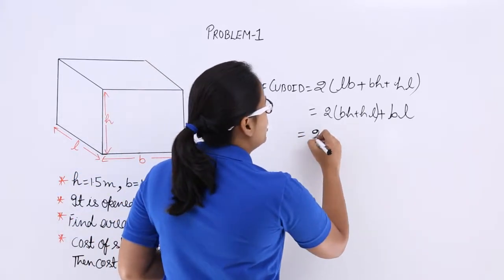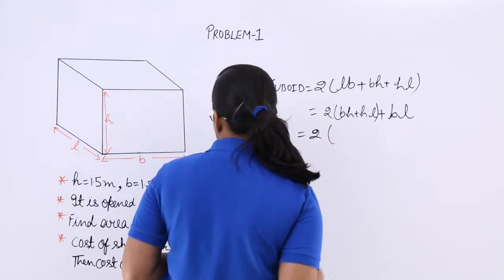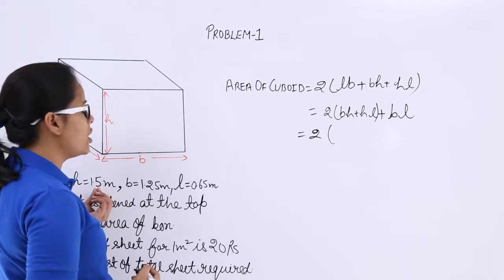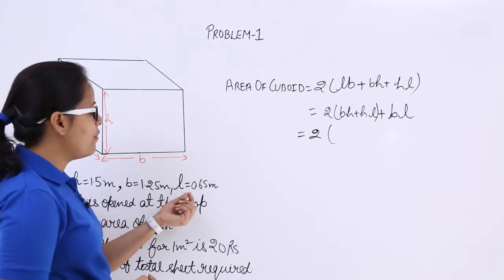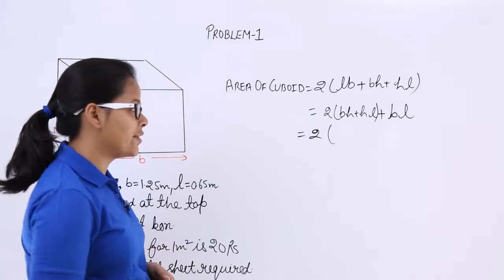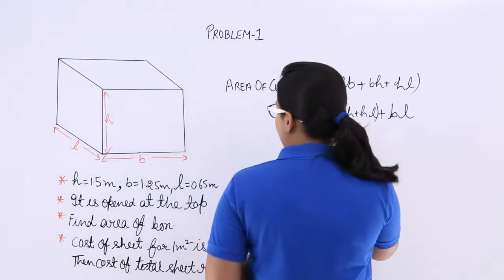Put the value for B, H and L here. Value for H is 1.5, B is 1.25 and value for L is 0.65. Let's put all these values here.